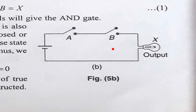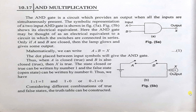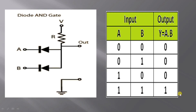This is the implementation of AND gate by switches. Now I shall implement AND gate using two diodes.